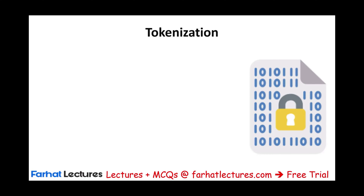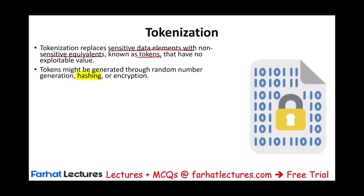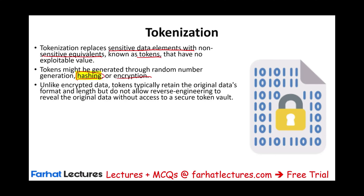Tokenization replaces sensitive data elements with non-sensitive equivalents known as tokens that have no exploitable value. Tokens might be generated through random number generation, hashing, or encryption. Unlike encrypted data, tokens typically retain the original data's format and length but do not allow reverse engineering — especially when using the hashing format — to reveal the original data without access to a secure token vault.